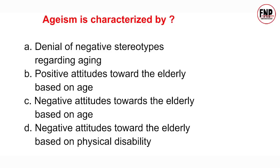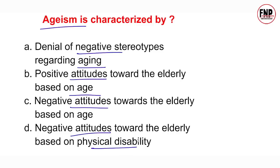Next question: Ageism is characterized by — Option A: denial of negative stereotypes regarding aging; Option B: positive attitudes towards the elderly based on age; Option C: negative attitudes towards the elderly based on age; Option D: negative attitudes towards the elderly based on physical disability. Ageism is shabda kis prakar ke characteristics ko rakhta hai, yeh aapko batana hai.